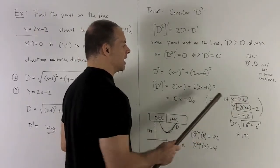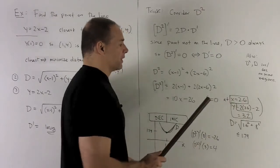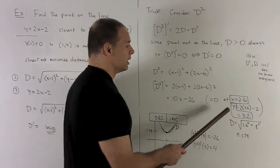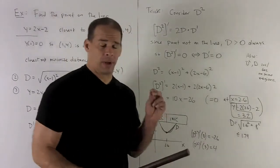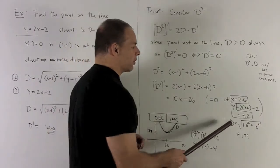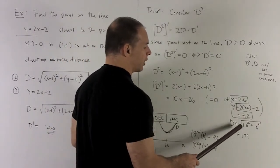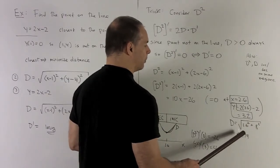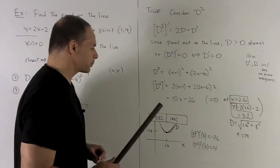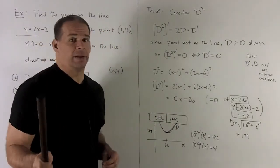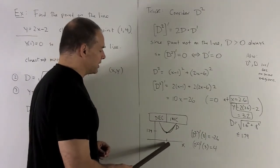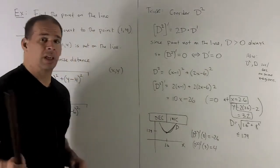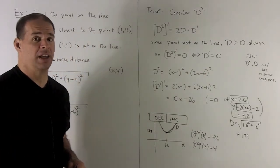x equals 2.6. My y, I put that into the equation for the line. That's 2 times 2.6 minus 2, which is 3.2. So I have my x and my y, which are a good candidate for my answer. If I figure out what d is at these points, we're going to have 1.6 squared plus 0.8 squared, square root. And that gives me roughly 1.79. So, on the graph of d, not d squared, I'm going to have 2.6 and then y values 1.79.